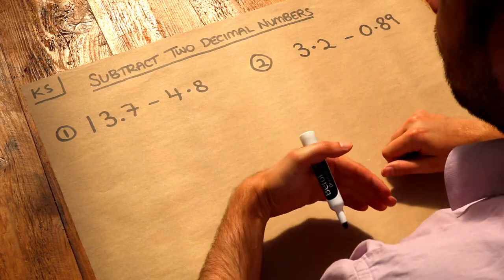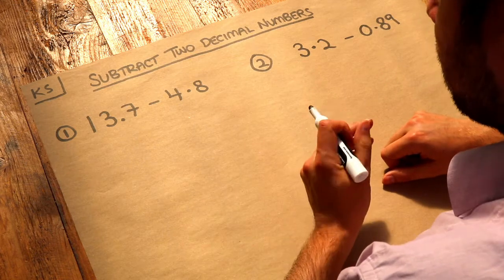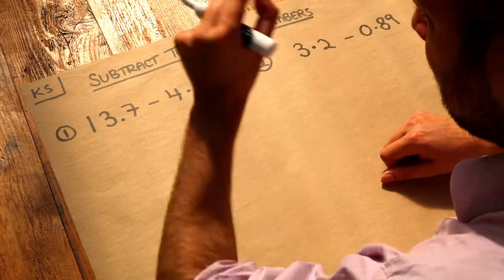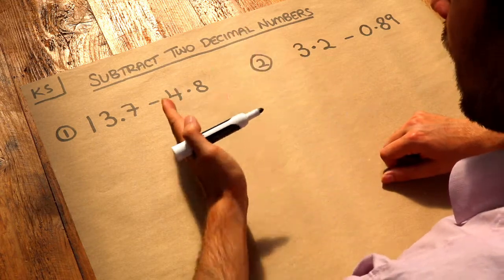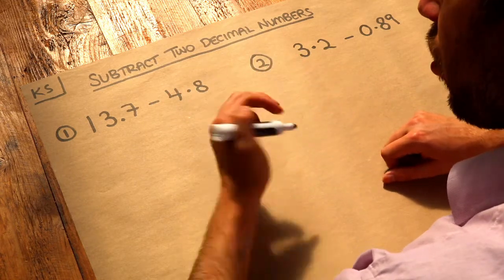The method is very similar to subtracting whole numbers. We want to make sure that we arrange the numbers so that digits of the same place value appear in the same column. So we're going to be doing column subtraction.